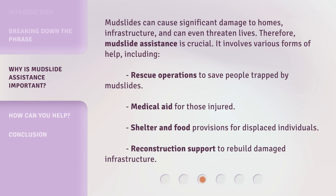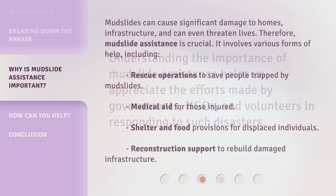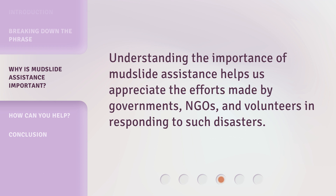Mudslides can cause significant damage to homes, infrastructure, and can even threaten lives. Therefore, mudslide assistance is crucial. It involves various forms of help, including rescue operations to save people trapped by mudslides, medical aid for those injured, shelter and food provisions for displaced individuals, and reconstruction support to rebuild damaged infrastructure. Understanding the importance of mudslide assistance helps us appreciate the efforts made by governments, NGOs, and volunteers in responding to such disasters.